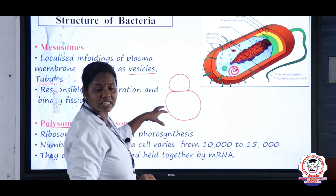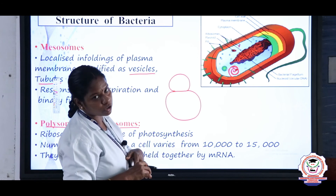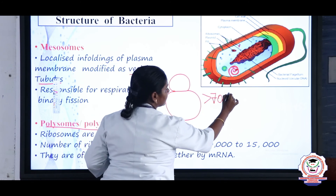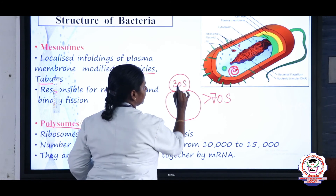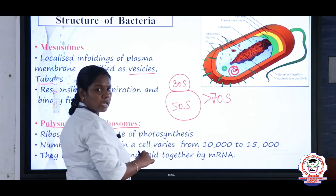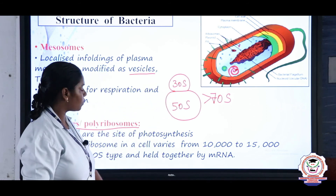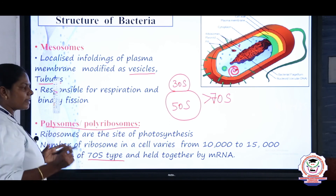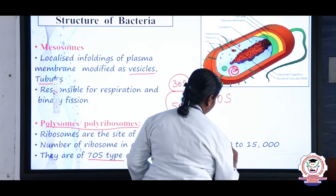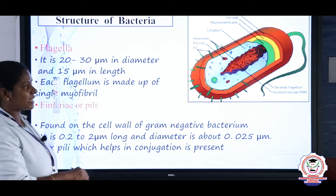Ribosomes are the main structures responsible for protein synthesis. Multiple ribosomes together form polyribosomes. Bacterial ribosomes are of the 70S type, consisting of two subunits: a larger 50S subunit and a smaller 30S subunit — 50 plus 30 gives 80, but when combined they form the 70S structure. They are held together by mRNA, and the number of ribosomes may vary from 10,000 to 50,000.